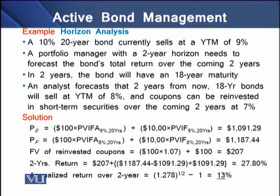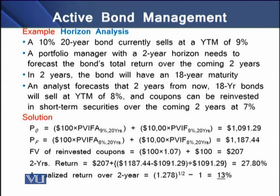An analyst forecasts that 2 years from now, the 18-year bond will sell at a YTM of 8%, and coupons can be reinvested in short-term securities at 7% over the coming 2 years. To determine the overall return, we first determine the current price using the present value of coupon interest and face value discounted at 9%. The future price is determined using the 8% rate, and the future value of reinvested coupons uses the 7% reinvestment rate.